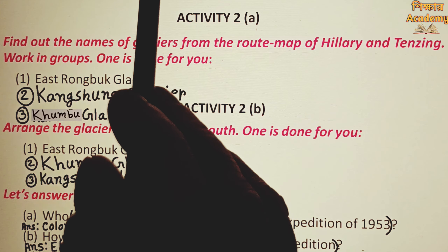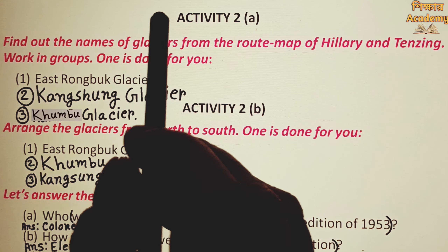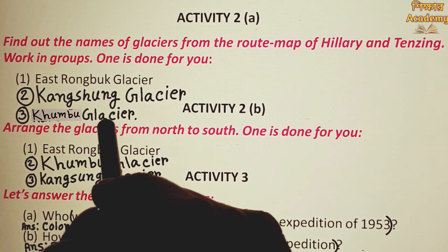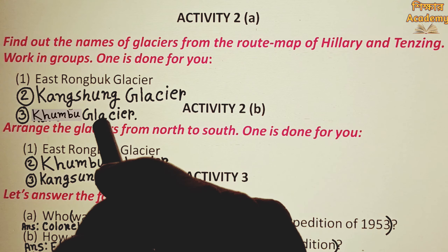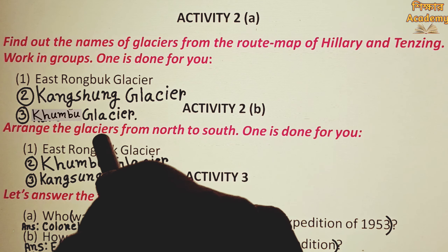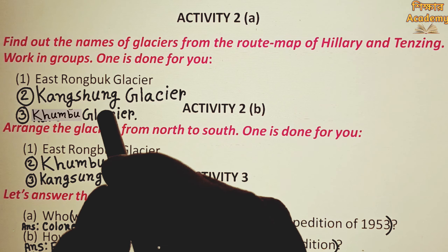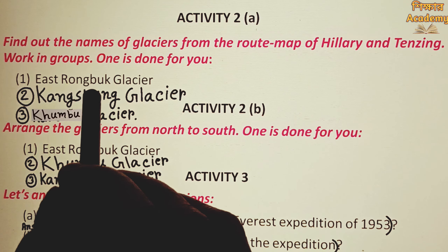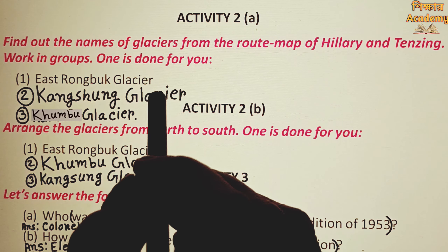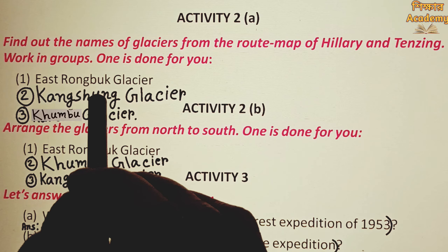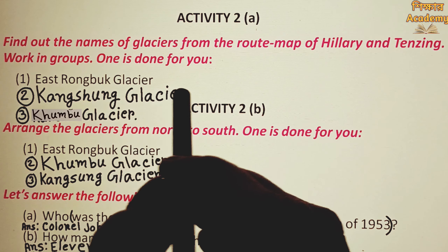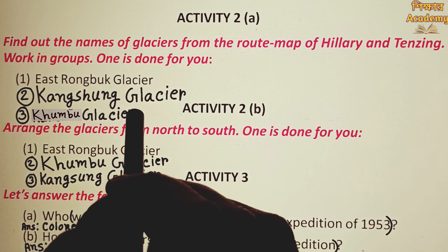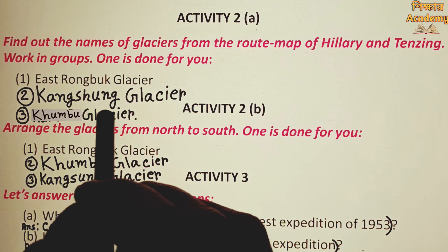Let's try the route map. You can see this route map. East Rongbuk glacier. Kangsum glacier.